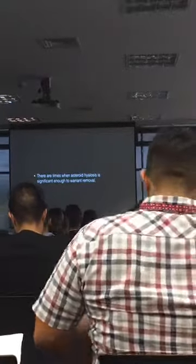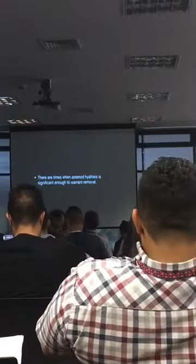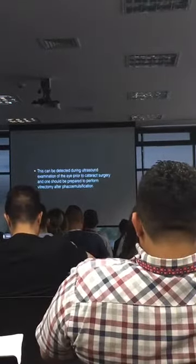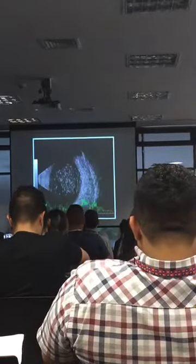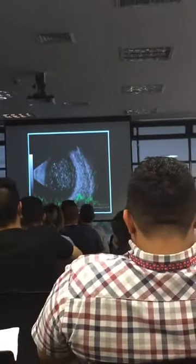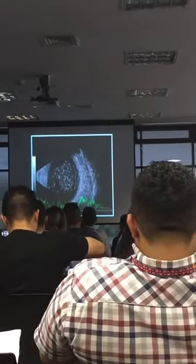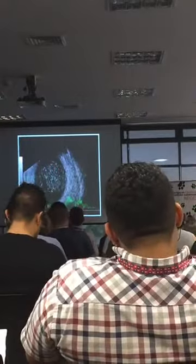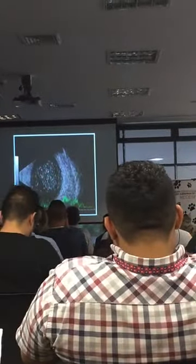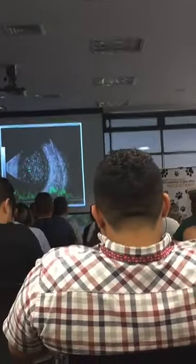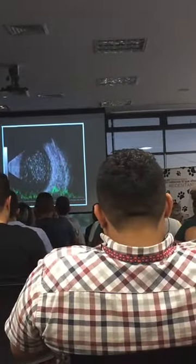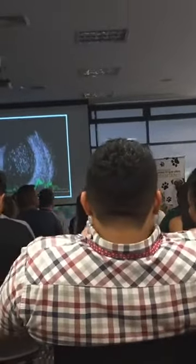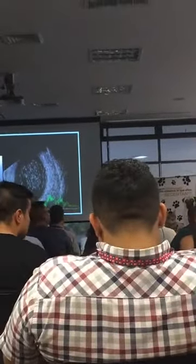I want to talk about asteroid hyalosis again. There are times when it should be removed at the time of cataract surgery. You can see it ahead of time — when you do your ultrasound exam, if you see this in the vitreous, you know you've got asteroid hyalosis. When I see this change I'm usually prepared to go in. I don't get fancy — I just make a small hole in the posterior lens capsule, go in with the vitrector, and remove the asteroid hyalosis. It's easy to do and it may save vision down the road.